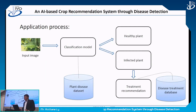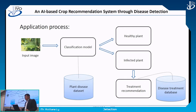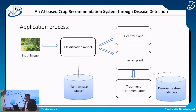Here is the process of our application. First, the farmer uses their mobile to capture an image from the farm to check whether there are problems on the leaf or plant. The image then passes through the classification model to determine whether the plant is healthy or infected. If the plant is infected, the system provides treatment recommendations based on the disease treatment database in the system.